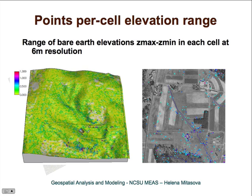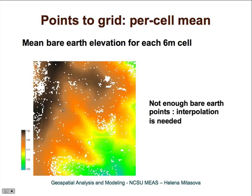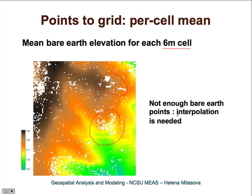Moreover, when we use the mean or average bare earth elevation per cell, the resulting digital elevation model still has quite a few holes. This tells us that even at six-meter resolution, binning is not really enough to create a DEM from this particular dataset because the point density is relatively low compared to current-day LiDARs. So we need to interpolate.